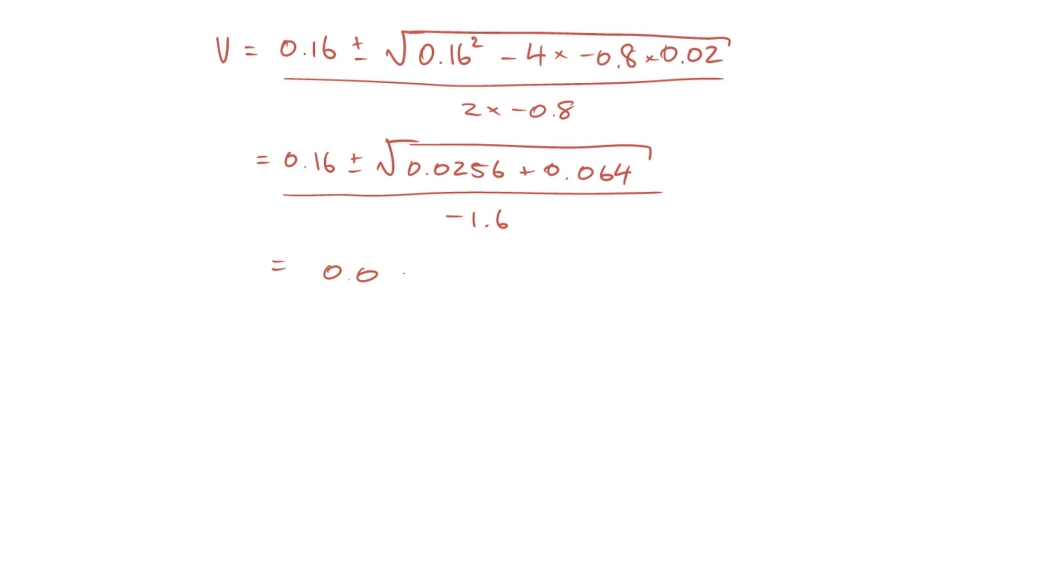So the two solutions that we find to that equation are that the volume is 0.087 cubic metres or negative 0.287 metres cubed. Obviously it's not physically realistic to have a negative volume, and so we can discard the second of those two solutions to the quadratic equation, and we know that the volume of reactor one is 0.087 metres cubed. And that's actually what was asked of us in the question statement.